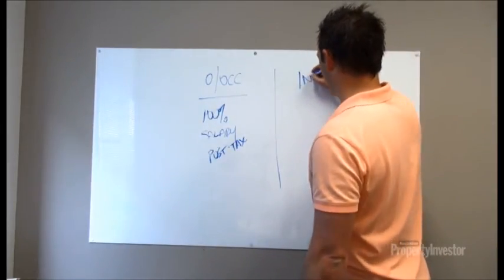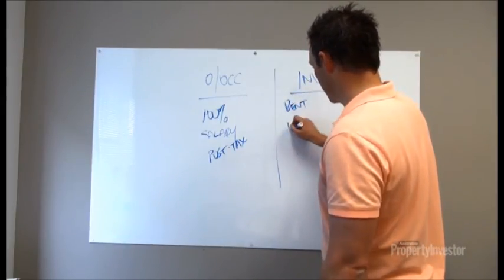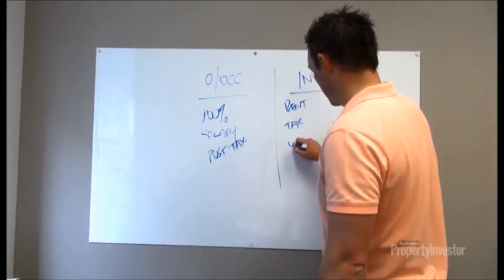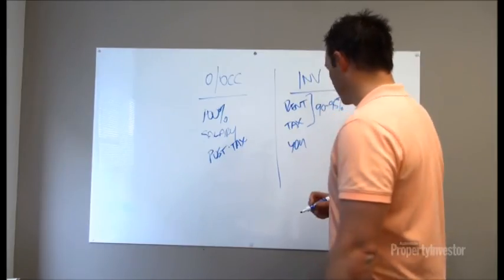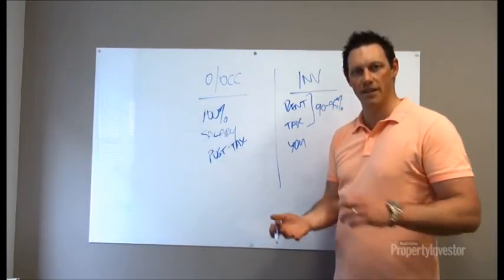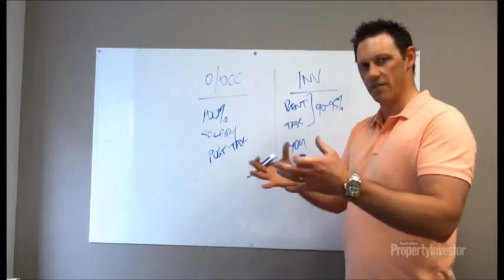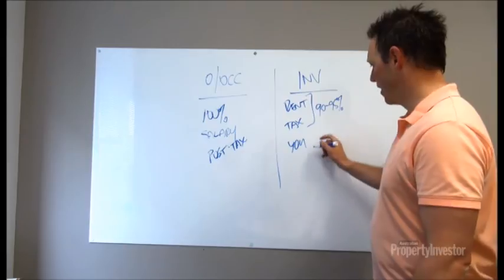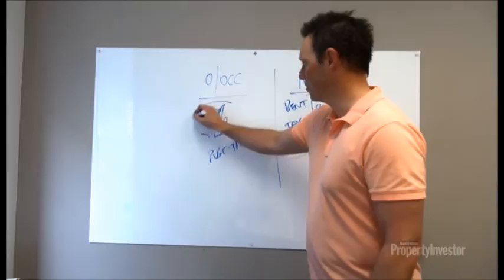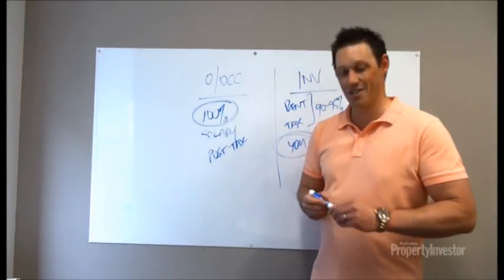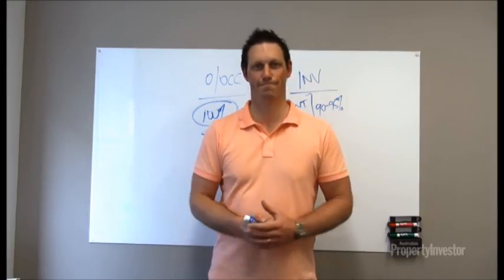If we look at the investment side of things, we've actually got the vast majority of the holding costs — 90 to 95% — paid for by other people: being the tenant and the government through the tax benefits. Banks build in their buffers and all those kind of things, but at the end of the day you need a lot less money out of your pocket to hold an investment than what you do your own owner-occupied home. So as a result, the borrowing capacity will be on a ratio of about 4 to 1.